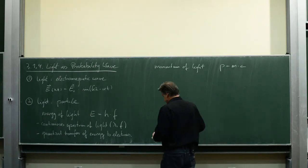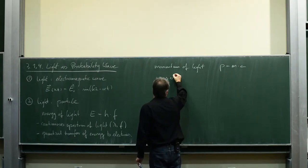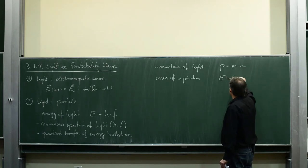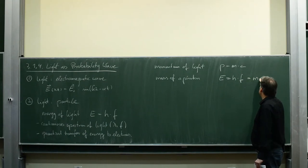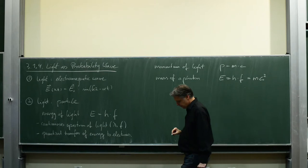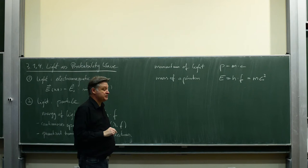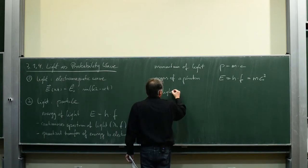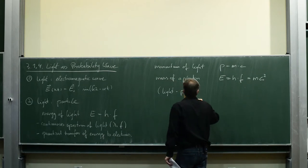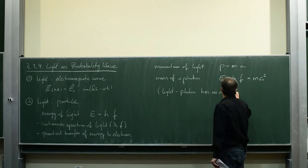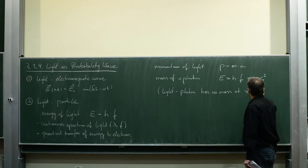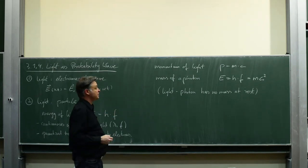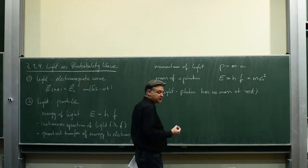And if light has a momentum, there's also a mass associated with it. Energy is Planck constant times frequency equals mc squared. Let me be very precise: a photon has no mass at rest. However, when light travels, it possesses an energy h times f, and that energy can be associated with a mass. That's the wave-particle duality.